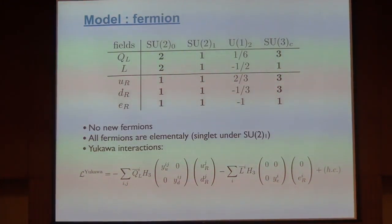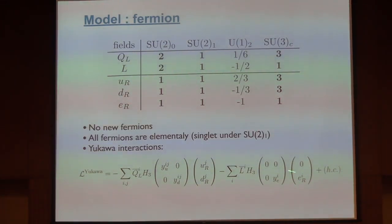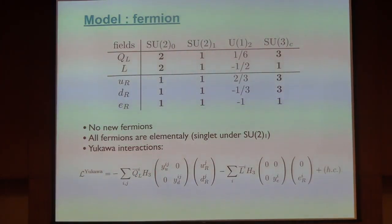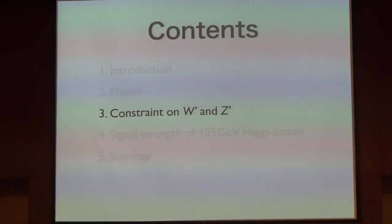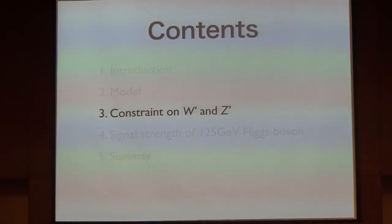The fermion sector is very simple. There are no extra fermions — only standard model fermions — and every fermion is elementary, so they are all singlets under SU(2)₁. The Yukawa interaction is completely analogous to the standard model, and only H3 enters the Yukawa interaction. So the Yukawa interaction is entirely constructed within the elementary sector.